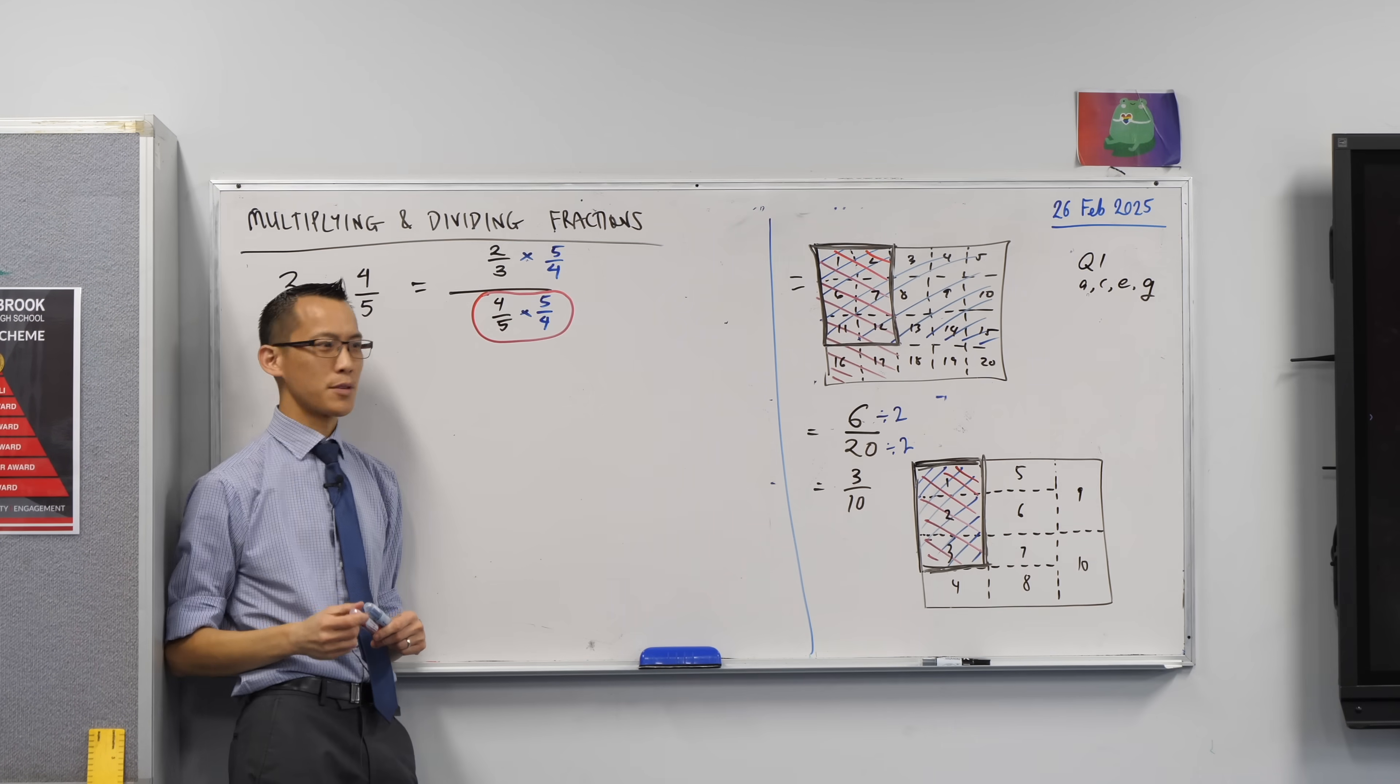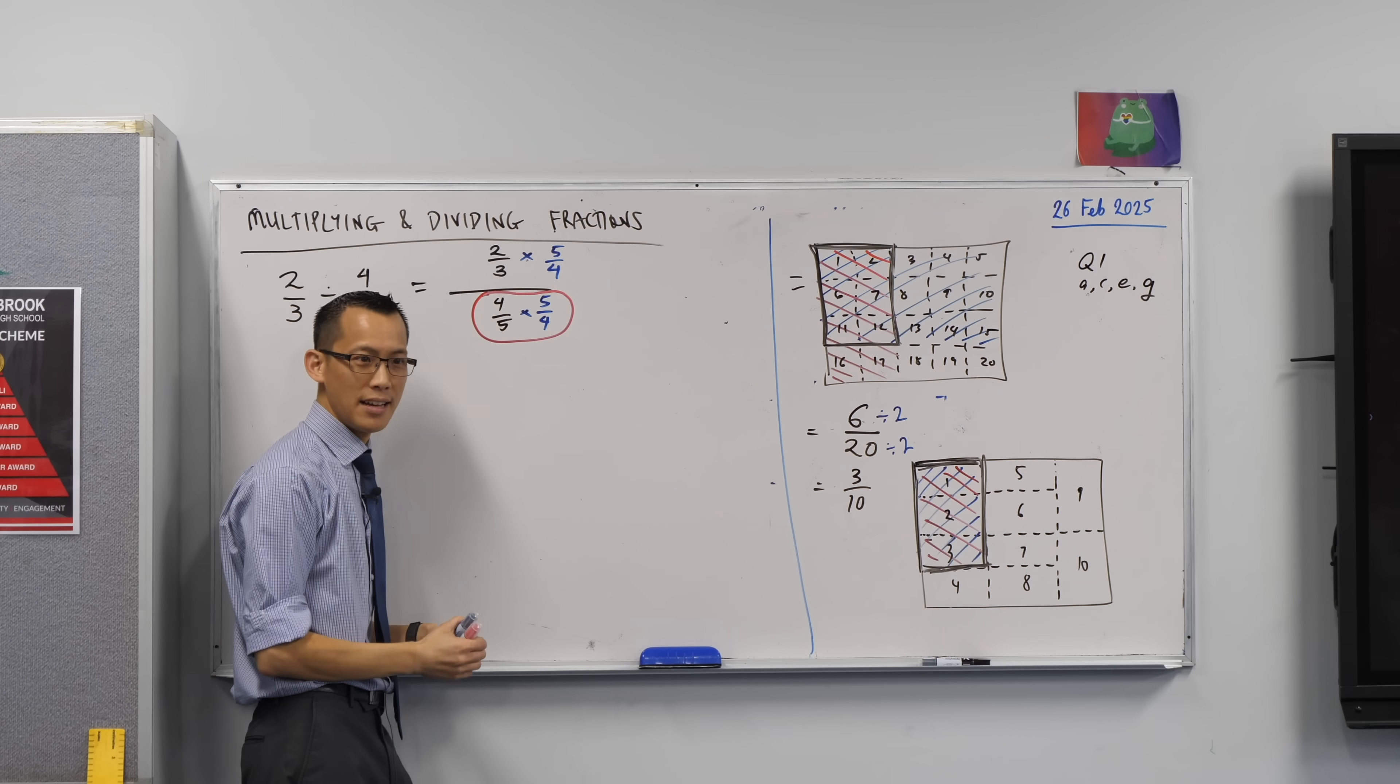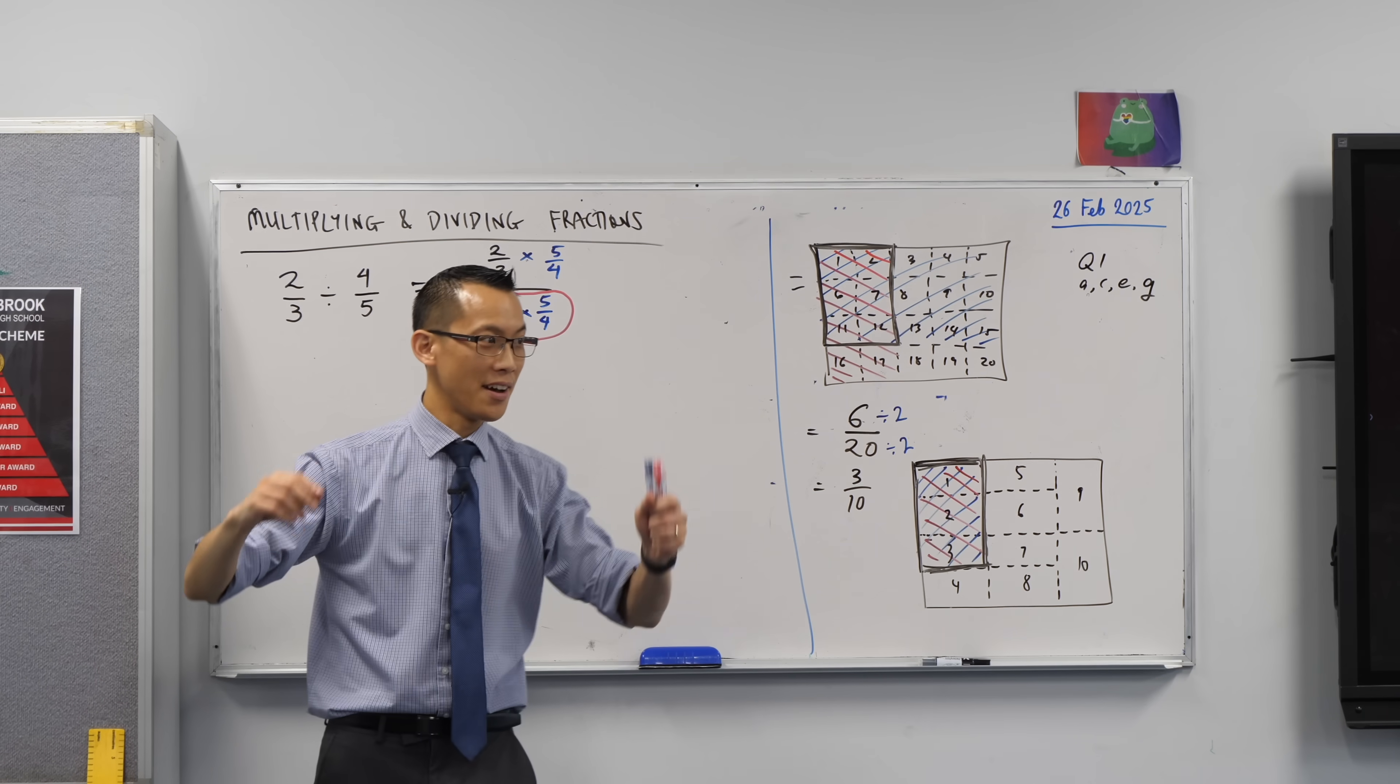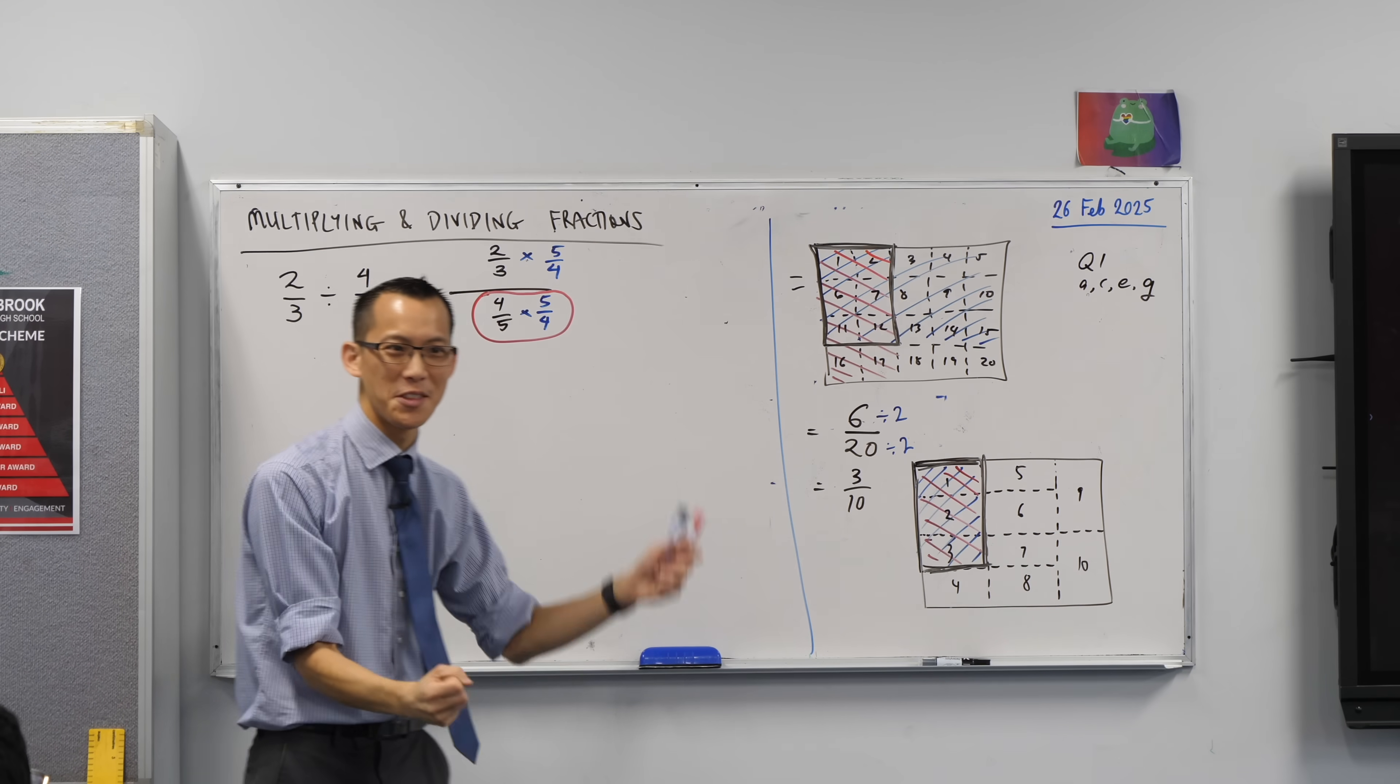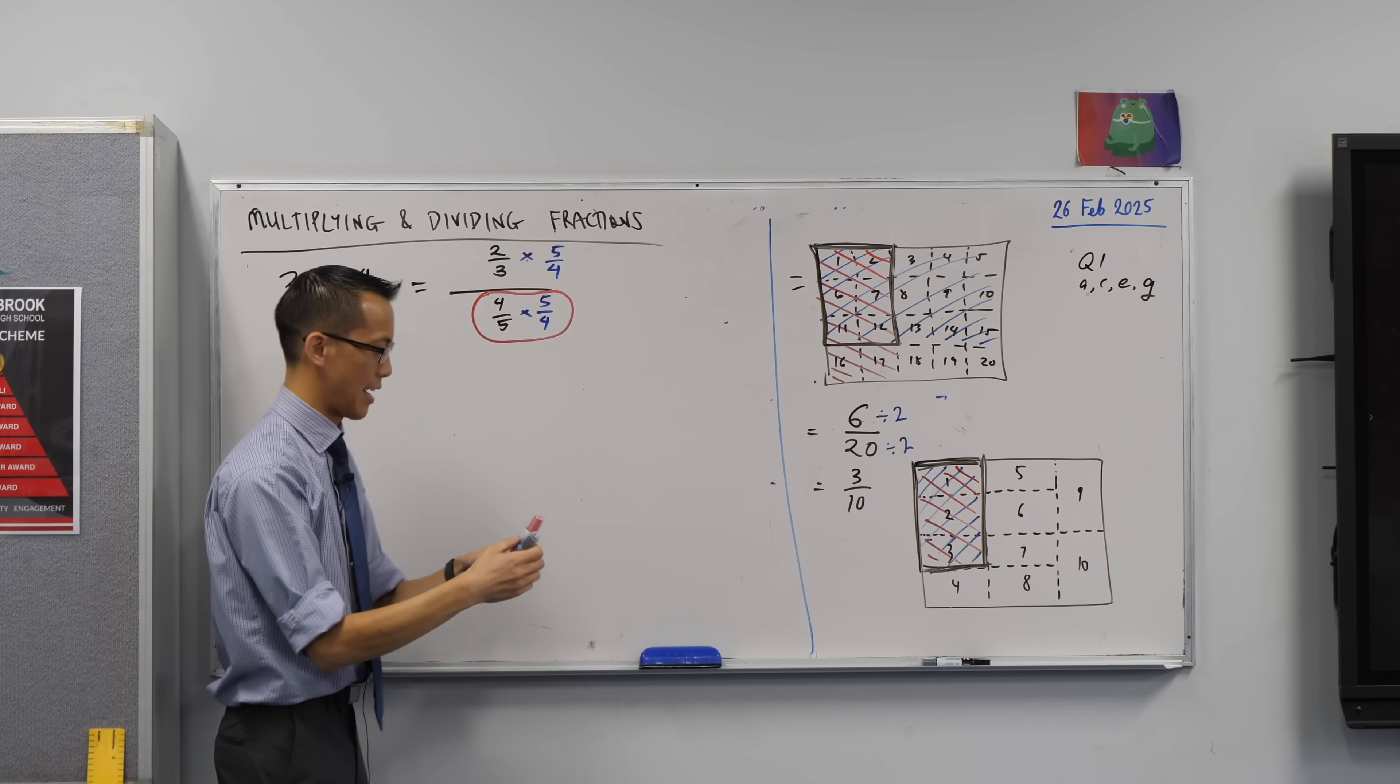Now have a look at this denominator right here. 4 fifths times 5 fourths. You multiply across, what are you going to get? A whole number. Not just any whole number. The best whole number that you can have on the denominator. You're going to get? 1. Or 20 over 20, which is 1, okay?